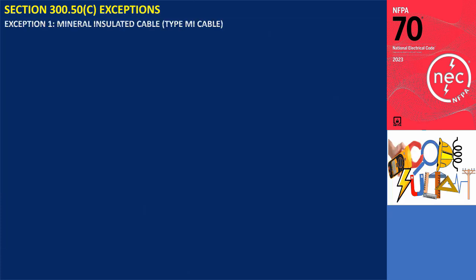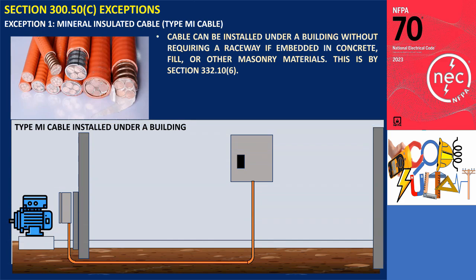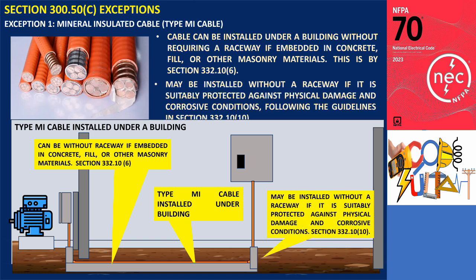Section 300.5(C) Exceptions. Exception No. 1: Type MI Cable. Type MI Cable can be installed within a building without a raceway if embedded in concrete, fill, or other masonry, as outlined in Section 332.10(6). It is also permitted for underground installations, provided it is adequately protected against physical damage and corrosive conditions, following Section 332.10. This flexibility makes Type MI Cable suitable for applications where raceways are impractical.